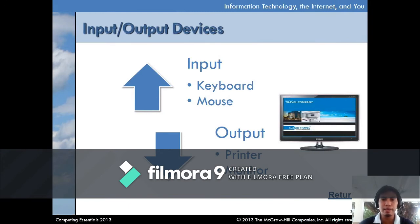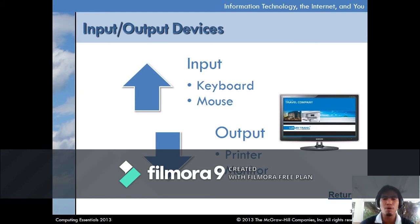Input devices translate what we understand into a form that the computer can process — the language the computer understands is different from the language we understand. Output devices do the reverse: they translate what the computer can process into a form that we can understand. Whatever the computer has processed, the output device translates it into something readable for us.